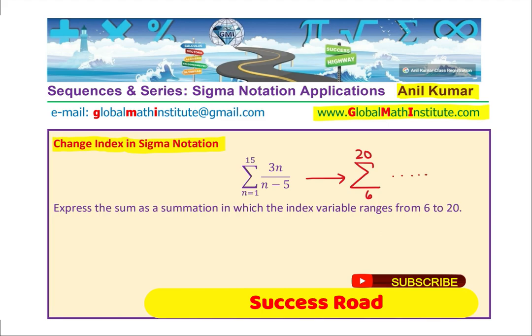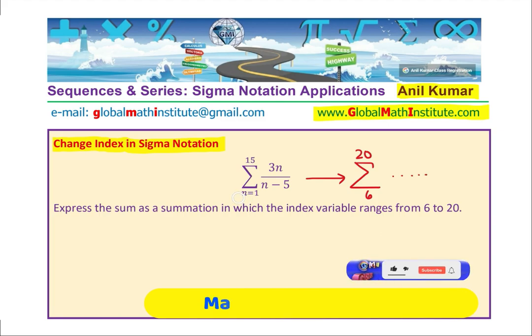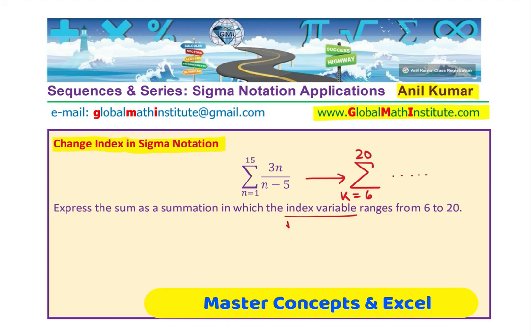That is really the question. As you understand, index is also called a dummy variable. So, you could name it with any other variable also. Let us say k equals 2. You could write any variable i, j, k and this is also called dummy variable. So, index variables are also called dummy variables.